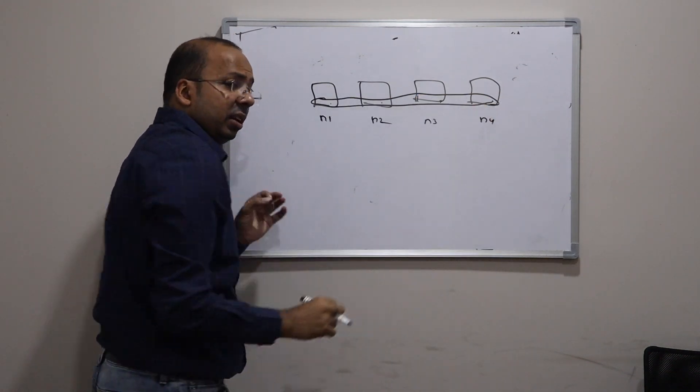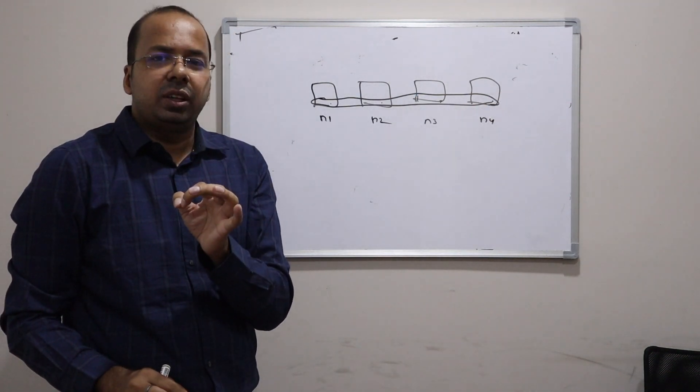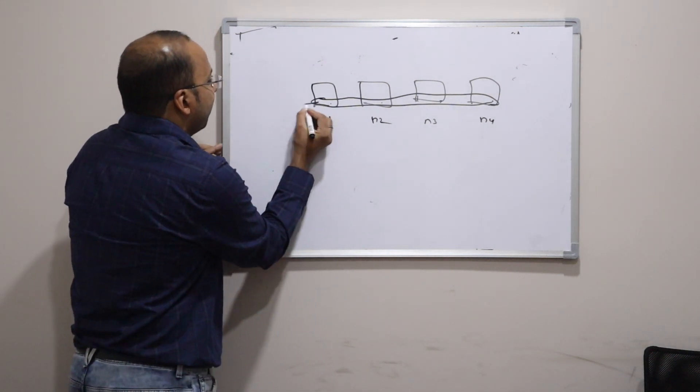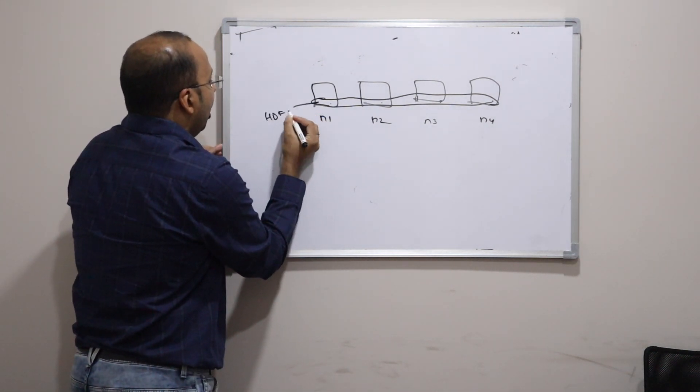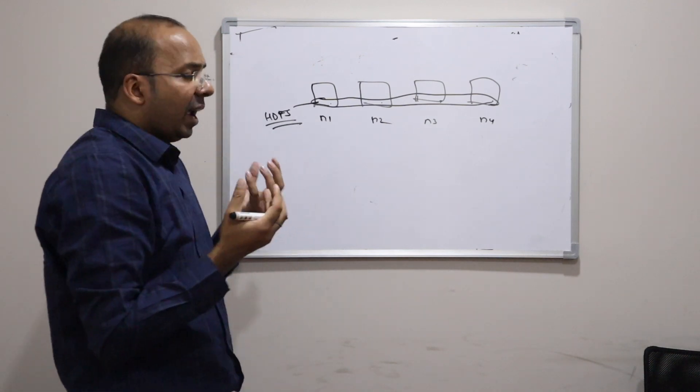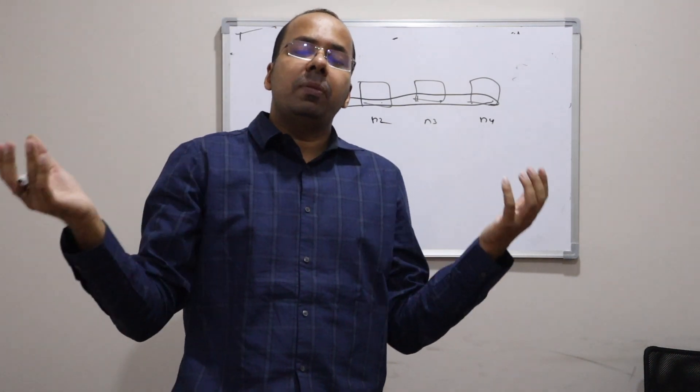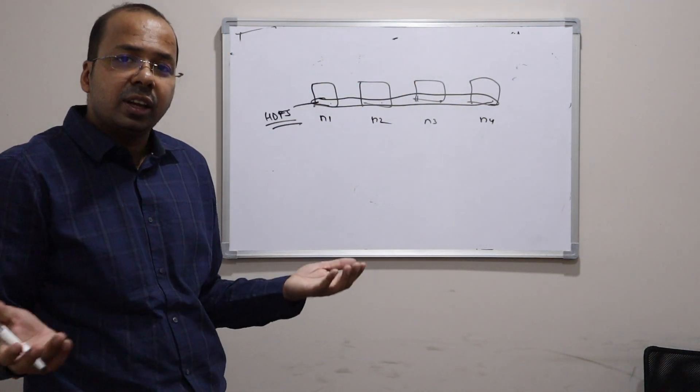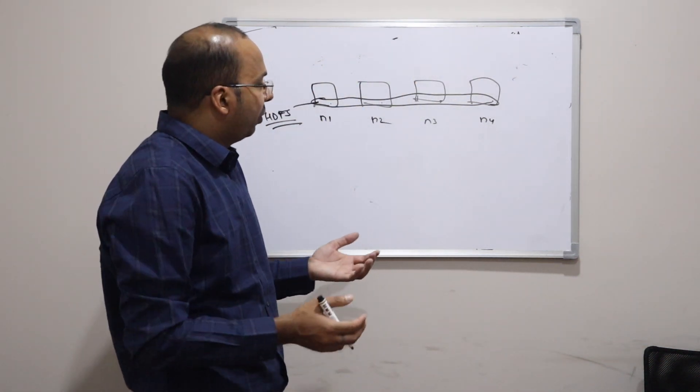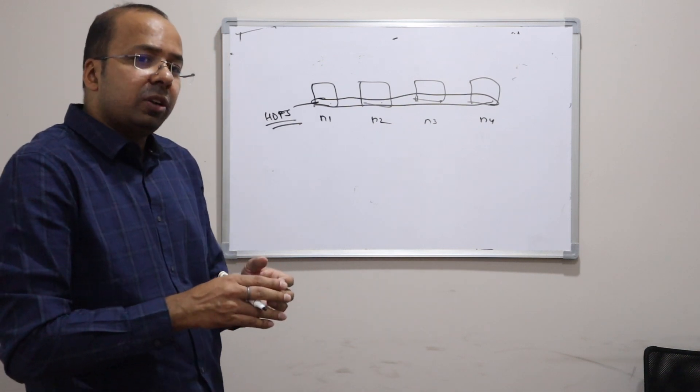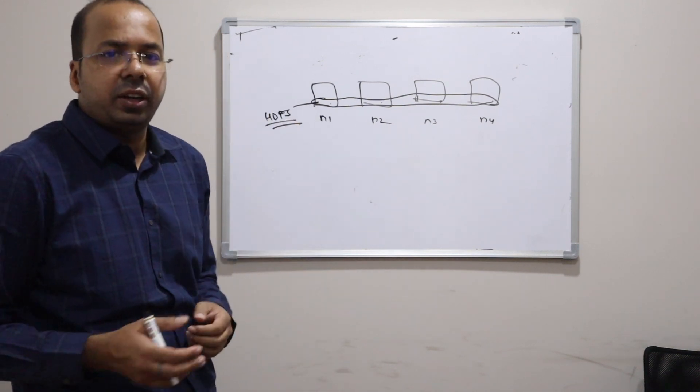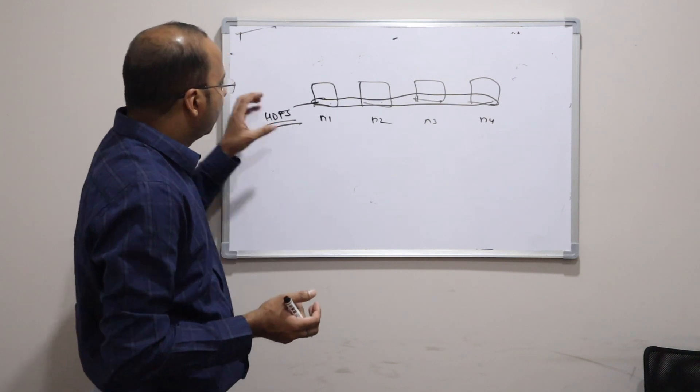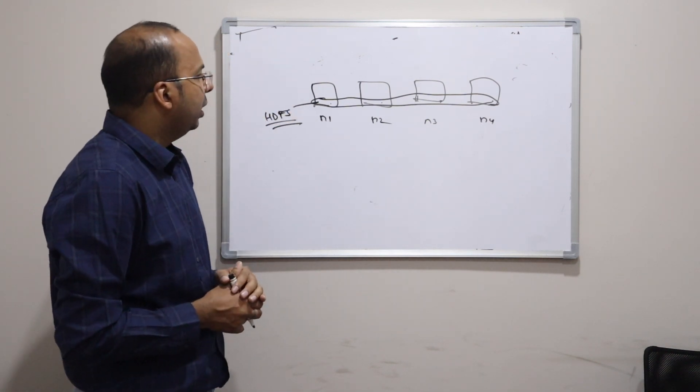This together in the Hadoop terminology is called as HDFS. Hadoop distributed file system which can handle huge amount of data. Because it is distributed across machines. It's not on a single machine. So we can logically build a cluster of 1000 machines and store any amount of data. And when the data grows add more machines to it.